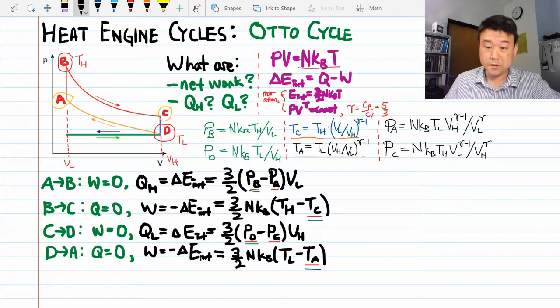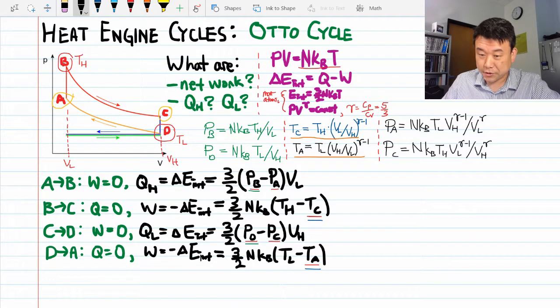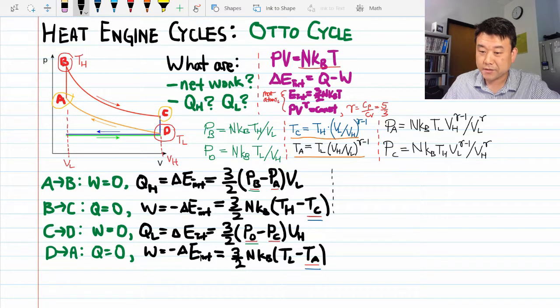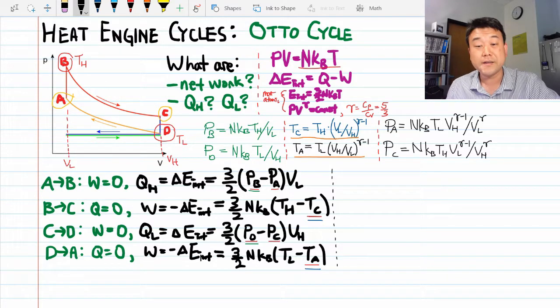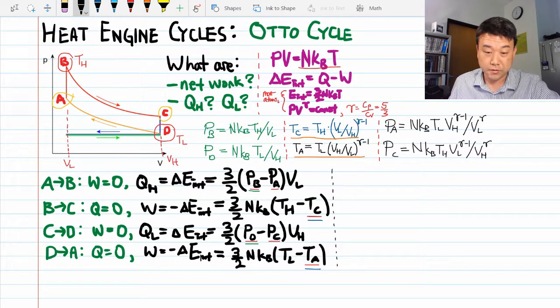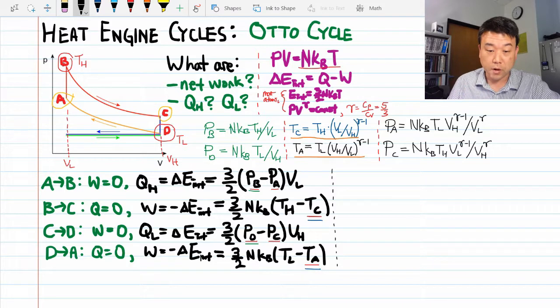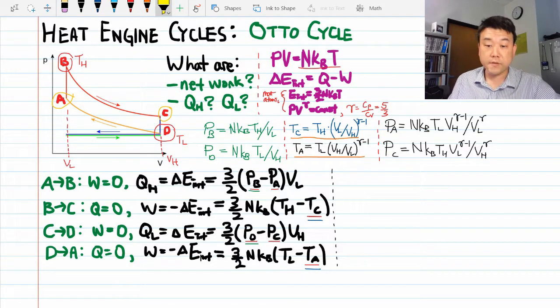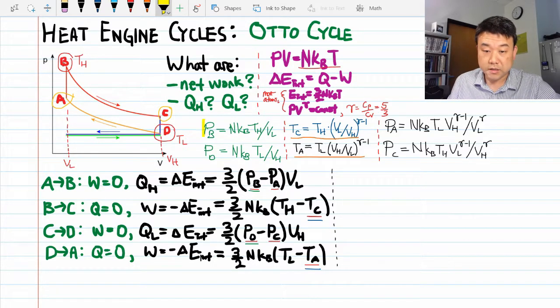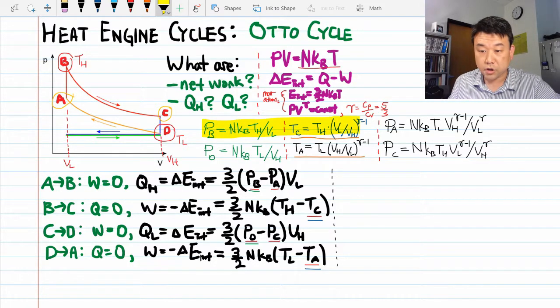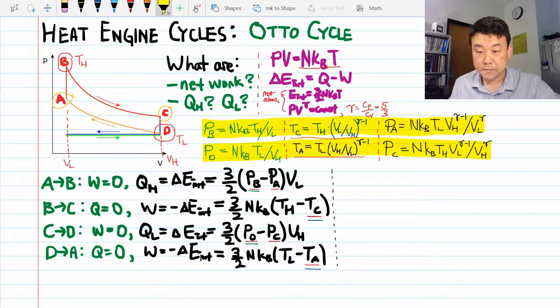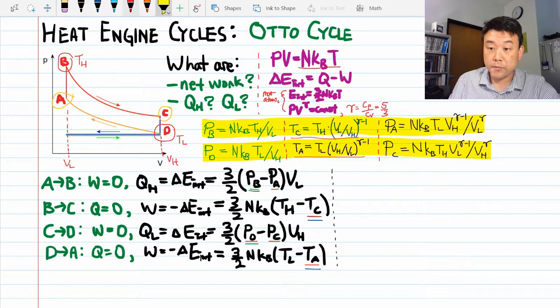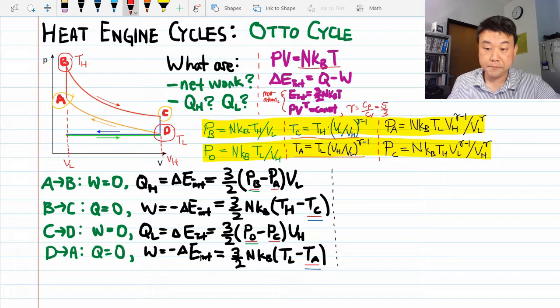So this is one of those problems where there isn't much to be gained by doing extensive algebra, because these expressions don't really simplify when you combine them algebraically. So I'm just going to write out the network and the heat transfers in terms of these expressions. And when we get to the summary video, I will use these expressions to work out the numerical values of these parameters.